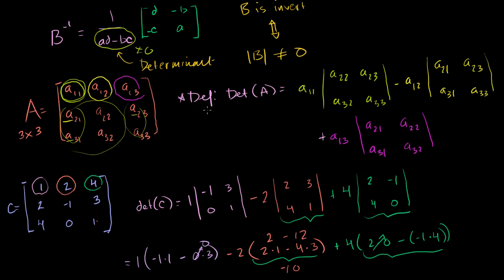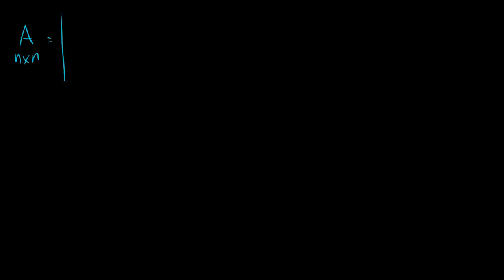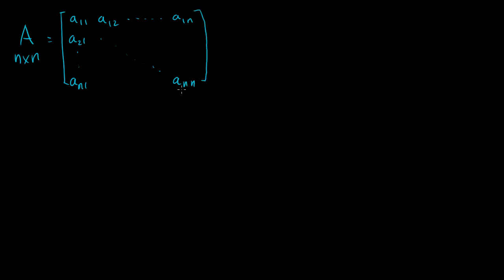Now let's see if we can extend this to a general n by n matrix. So let's write out our n by n matrix. Let's say I have some matrix A that is an n by n matrix. It looks like this: a(1,1), a(1,2), all the way to a(1,n). Going down, the second row starts with a(2,1), all the way down to a(n,1). And the diagonal entry at the bottom right would be a(n,n).